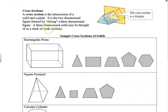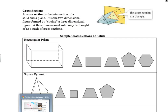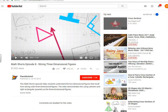The first thing we're going to look at is the cross section. It's the intersection of a solid and a plane — a two-dimensional figure formed by slicing a three-dimensional figure. A three-dimensional solid may be thought of as a stack of cross sections. I want to show you a video that will help illustrate this concept in a more dynamic way.